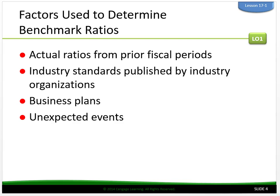There are four factors used to determine benchmark ratios. First, actual ratios from prior fiscal periods — current fiscal period ratios tend to be similar to prior period ratios. Number two, industry standards published by industry organizations. A business can be expected to have ratios similar to other businesses in the same industry.